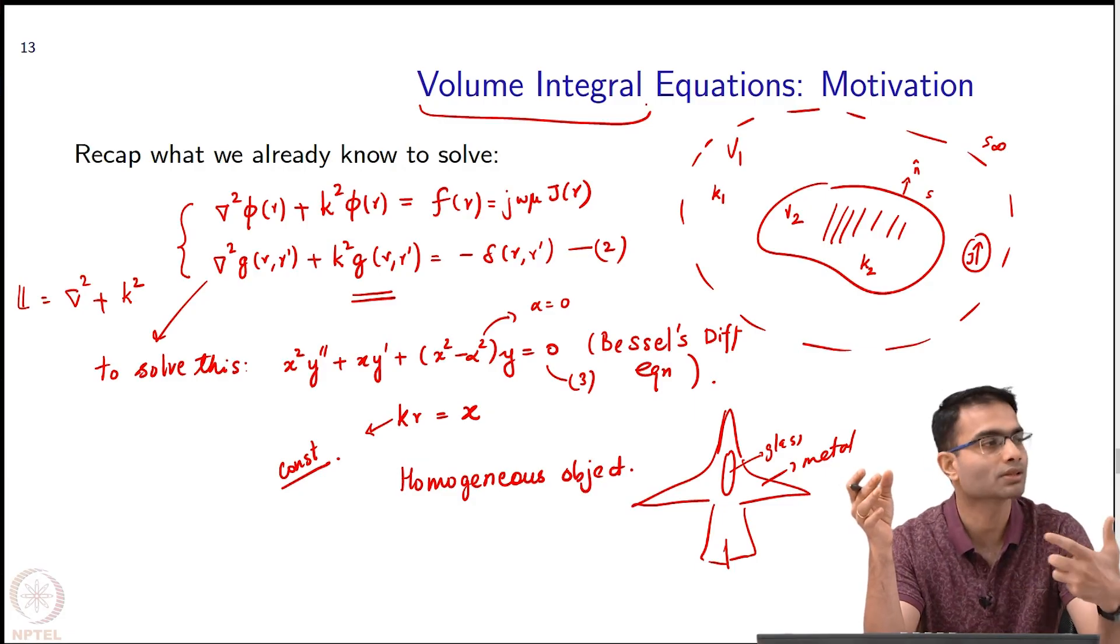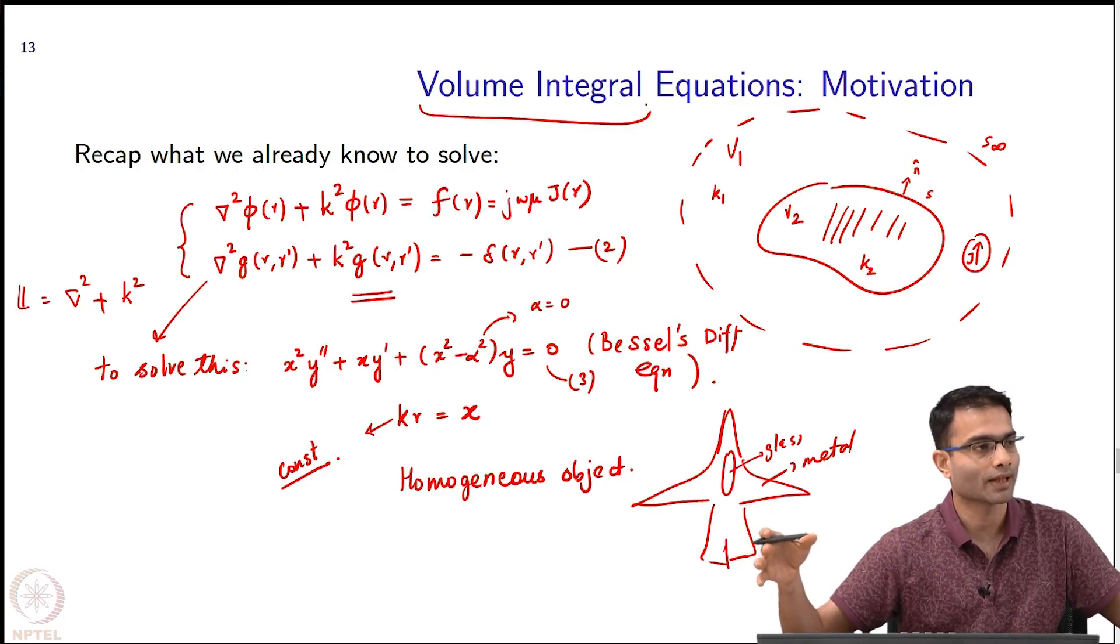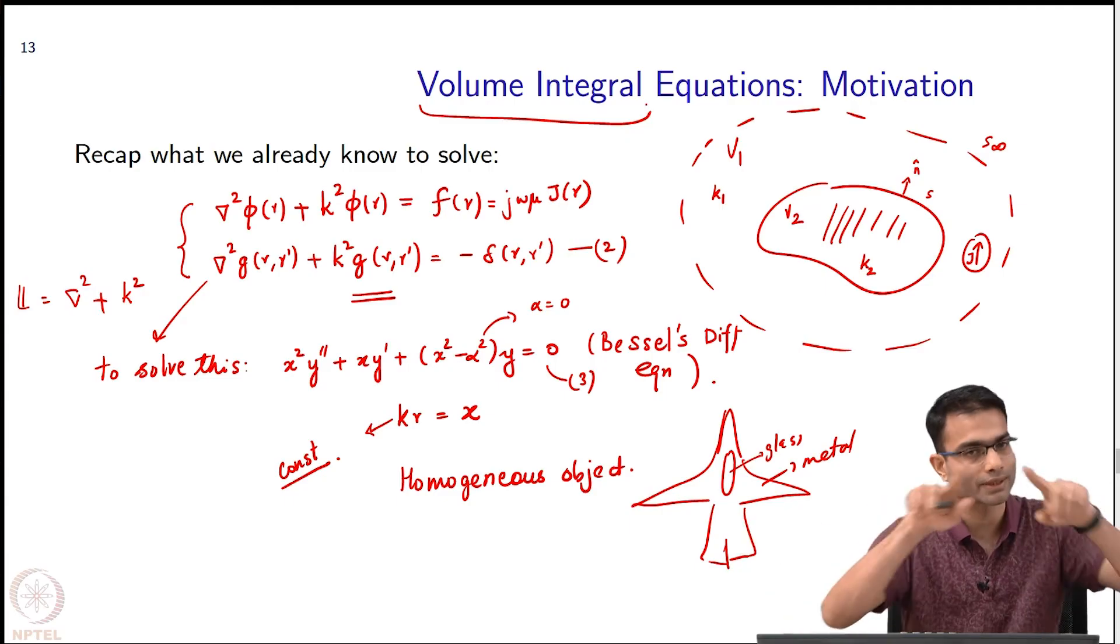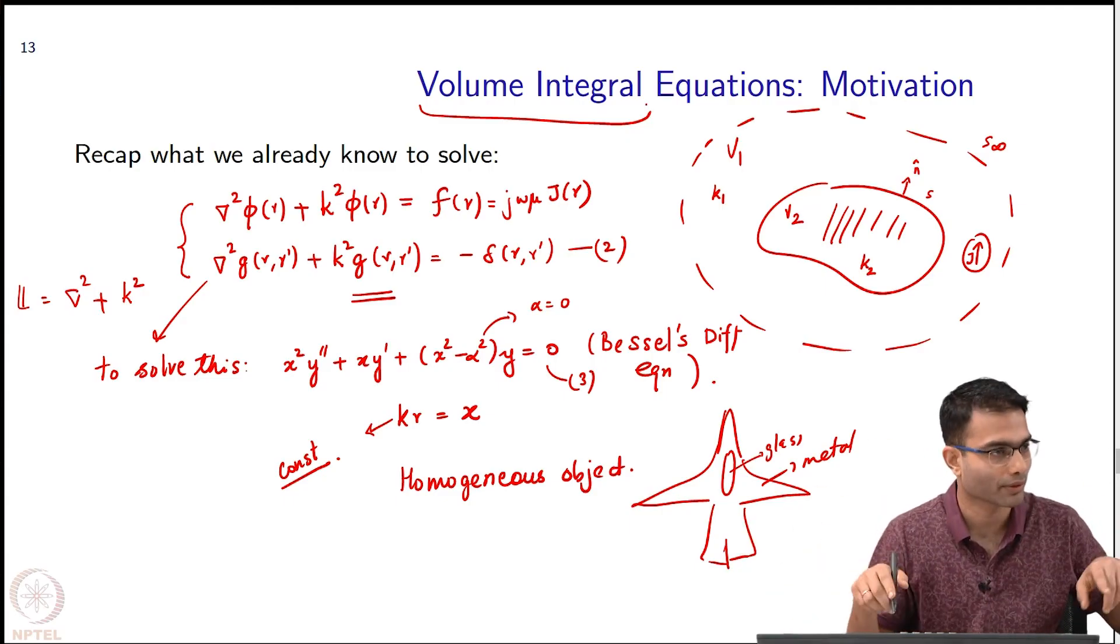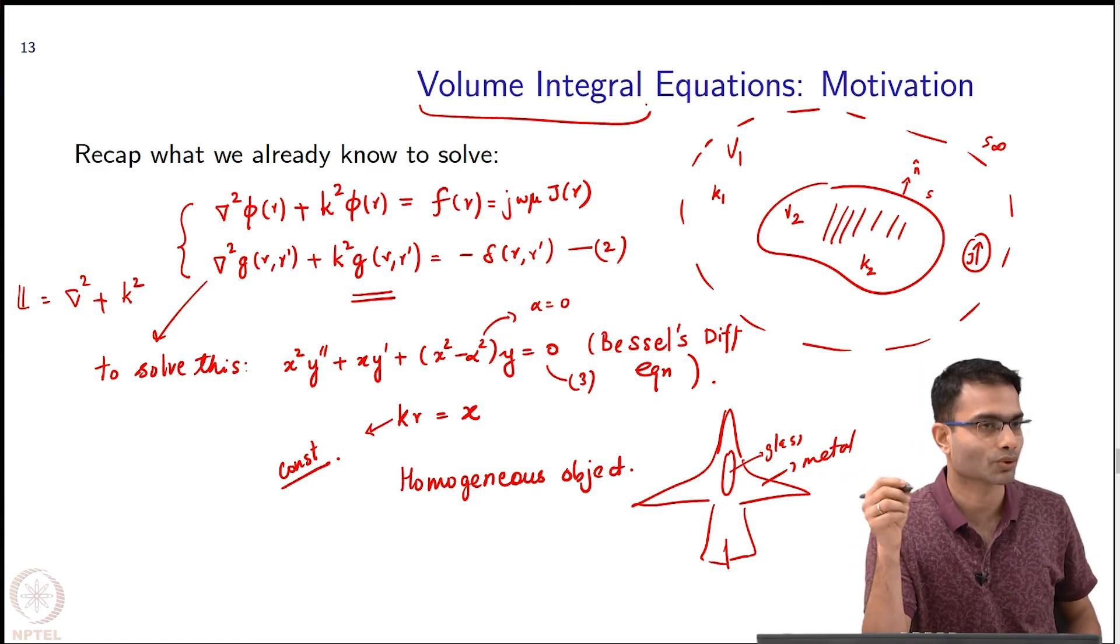The number of computations as I take a surface area will have more number of elements to calculate then just the line around it. Computation is going to increase, but that is a price that I have to pay for solving this.